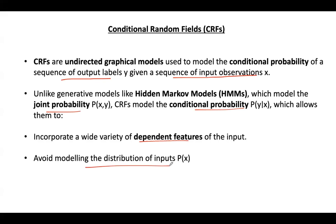For example, suppose you are trying to label each word in a sentence with its POS tag. For the input 'the cat sat on the mat', you assign: determiner for 'the', noun for 'cat', verb for 'sat', preposition for 'on', determiner for 'the', and noun for 'mat'. The label of a word may depend on the word itself and also the labels of its neighboring words, and conditional random fields allow you to consider all these dependencies.